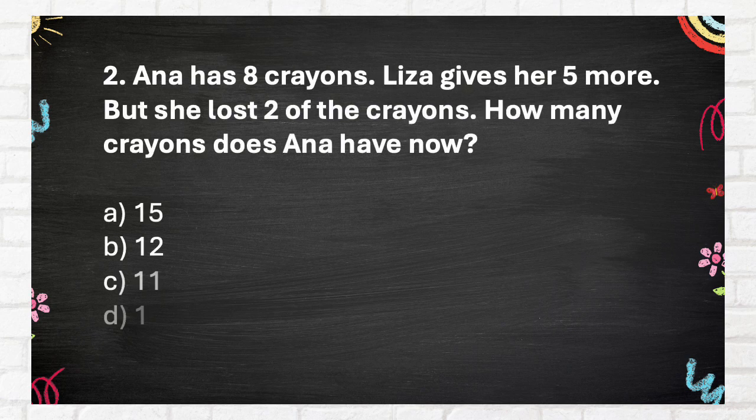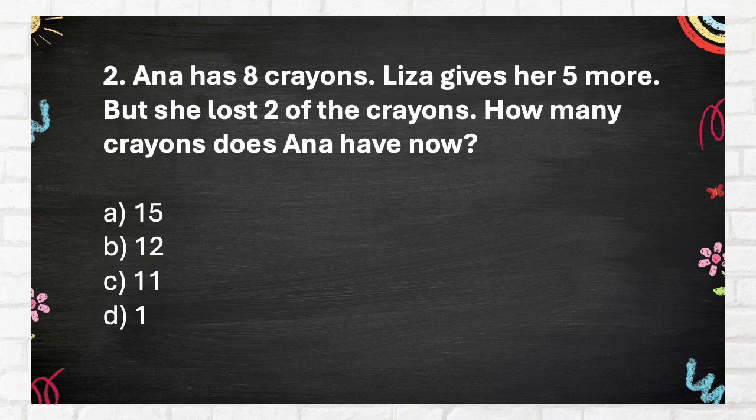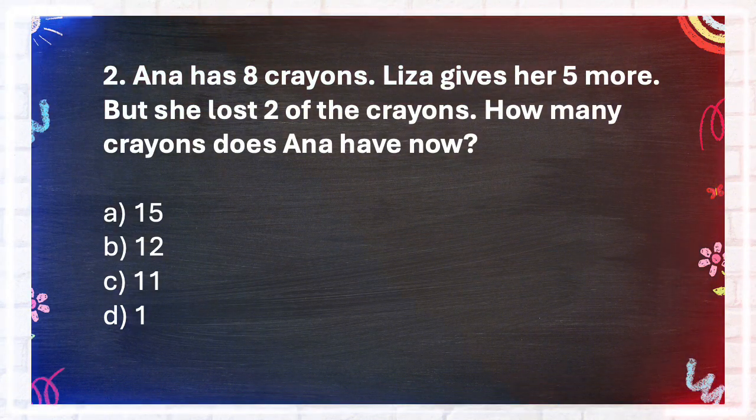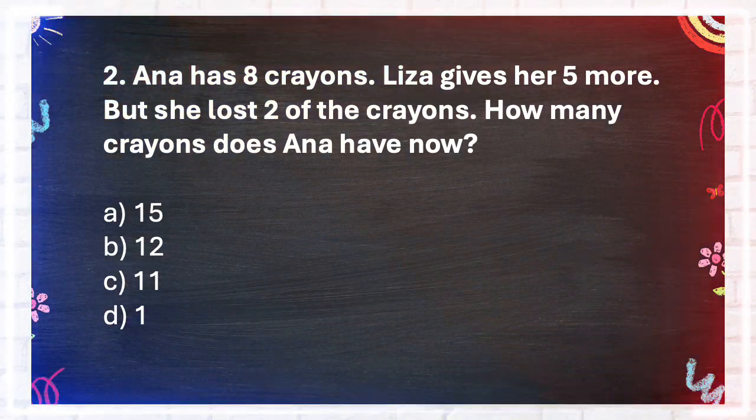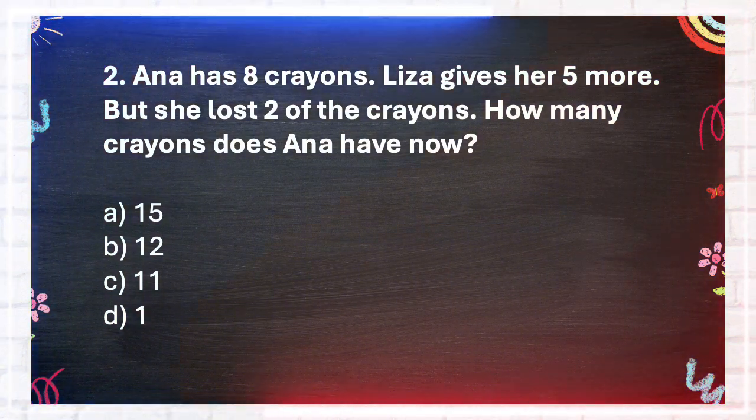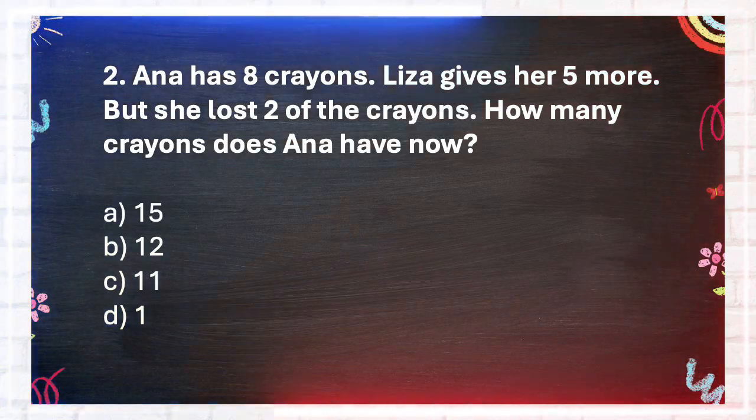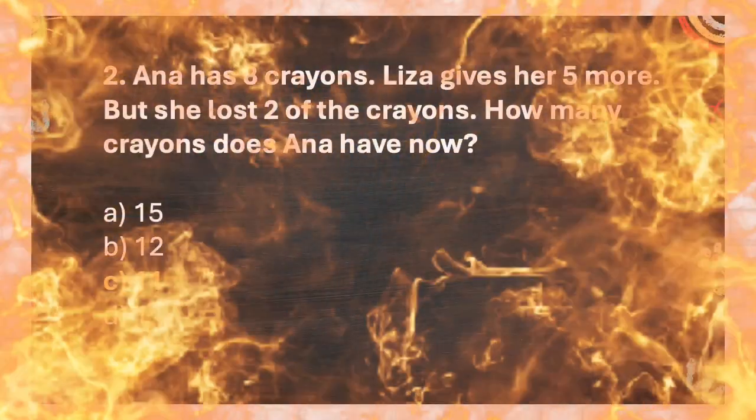Question number 2. Anna has 8 crayons. Liza gives her 5 more, but she lost 2 of the crayons. How many crayons does Anna have now? A 15, B 12, C 11, D 1. The answer is C, 11.